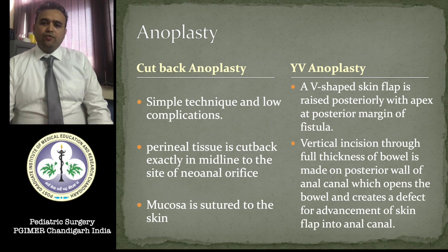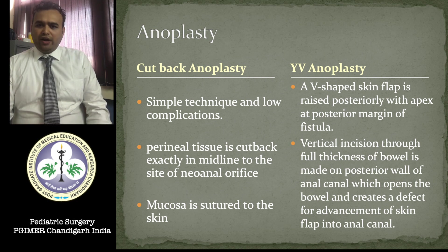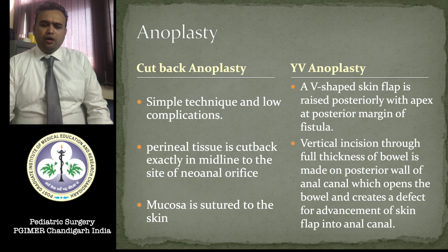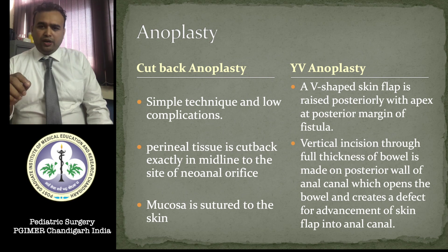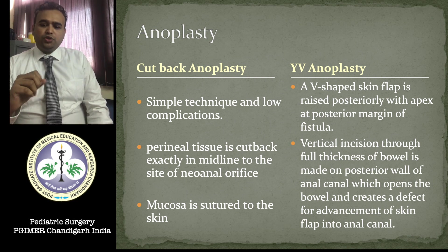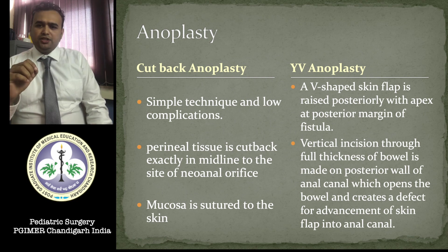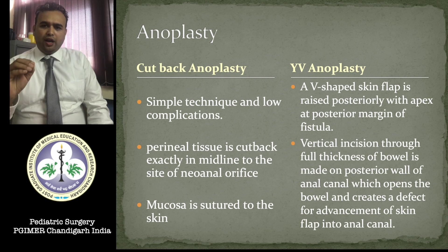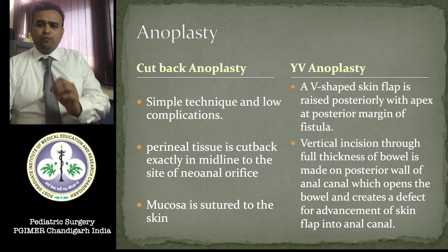Once we know the patient has a low ARM, we can go ahead with definitive treatment with anoplasty. Anoplasty can be either cut-back anoplasty — a simple procedure where an incision is made on the midline at the site of the neonatal orifice, the rectum is opened, and mucosa is stitched to skin — or Y-V anoplasty, where a V-shaped skin flap is raised posteriorly with the apex at the posterior margin of the fistula, a vertical incision is made on the posterior wall of the anal canal, and the skin flap is advanced into the canal for a wide opening.